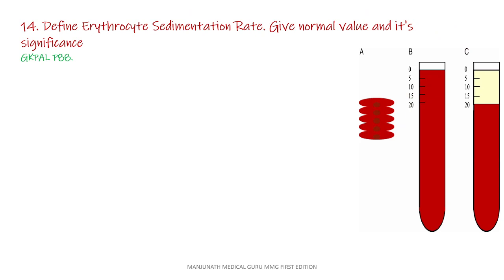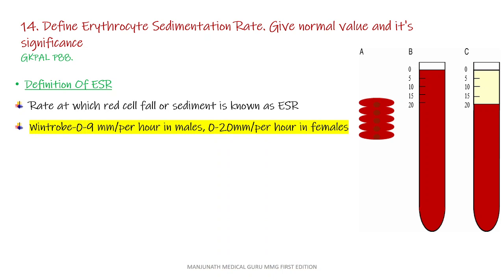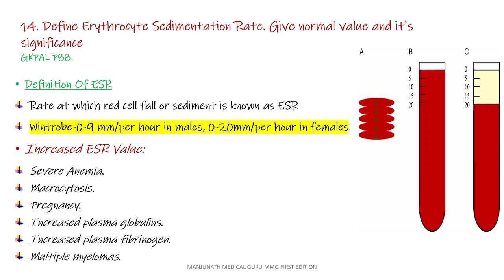Question number 14: Define erythrocyte sedimentation rate, give normal value and its significance. The answer is from GK Paul, page number 88. ESR is the rate at which red cells fall or sediment. There are two methods: Wintrobe's method and Westergren method. In Wintrobe's method, normal is 0 to 9 mm per hour in males and 0 to 20 mm per hour in females. The ESR value is more in females compared to males. Conditions with increased ESR include severe anemia, macrocytosis, pregnancy, increased plasma globulins, increased plasma fibrinogen, and multiple myeloma.